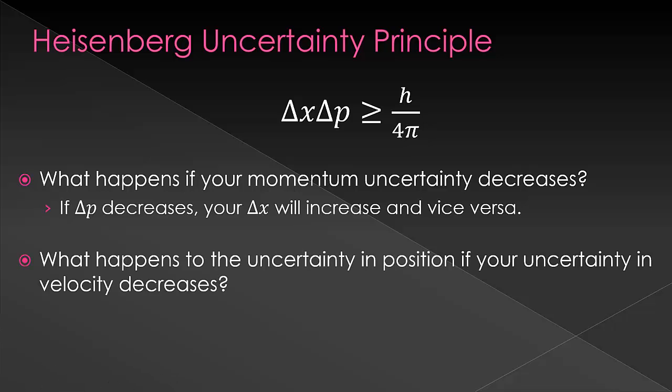Similarly, because most times we know our mass with greater certainty, what would happen to the uncertainty in position if your uncertainty in velocity decreases? Overall, this would decrease the certainty in your momentum, which, given that you are near the theoretical limit, must mean that delta x increases.